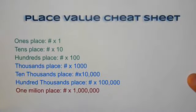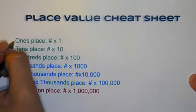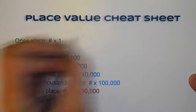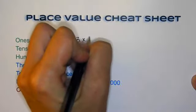Within our cheat sheet, I would like to make some connections. So if we have a number in the ones place, like let's say a three, okay? So I'm going to say three times one.